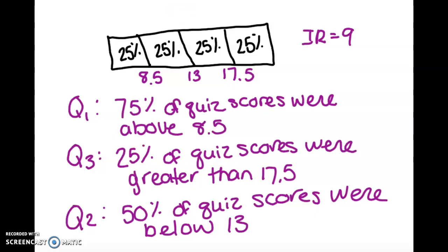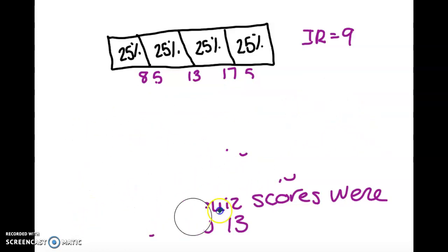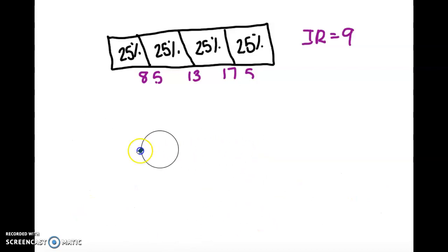And now let's interpret the interquartile range. So the interquartile range, remember, is Q3 minus Q1. So we're talking about in here, and that we subtracted.